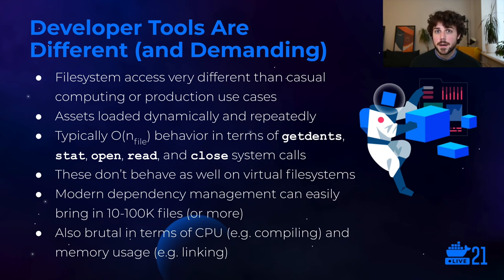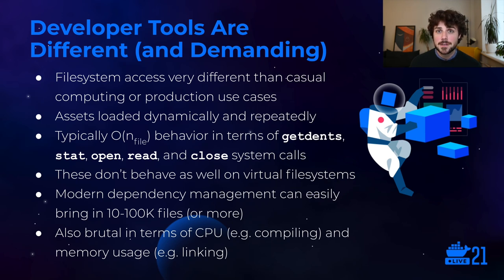There's a lot of file system traversal and file system reads, and you see linear behavior in terms of the number of source code files you have. There are many system calls that access data off the file system: getdents for listing directories, stat for grabbing file and directory metadata, and open/read/close for actually reading files off disk. Fortunately, developer tools don't tend to be too write-heavy, so that's not really a problem. But these really don't tend to perform well historically on virtual file systems.